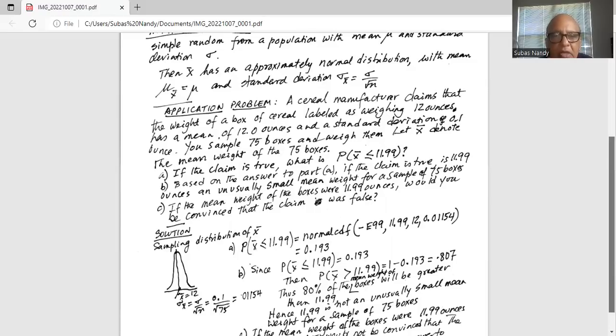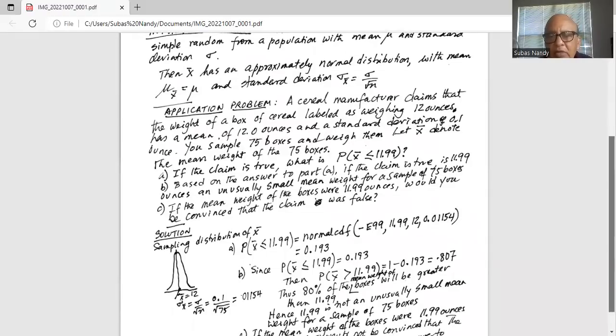So, we are required to find out what is the probability of x bar less than or equal to 11.99. So, we go to our calculator TI-84 second button and then VARS button.